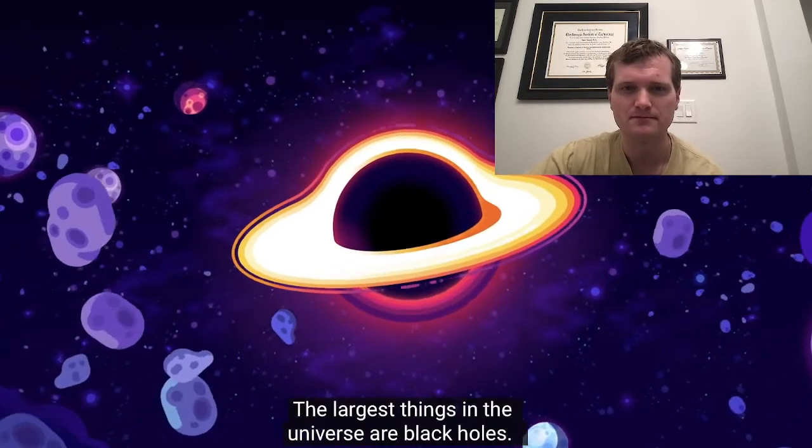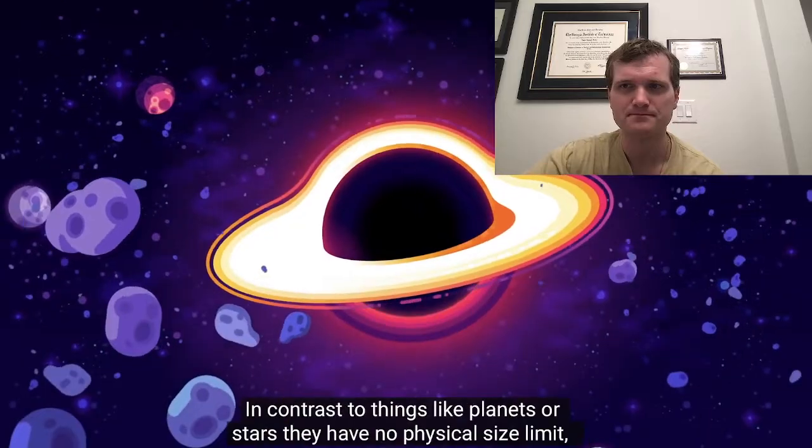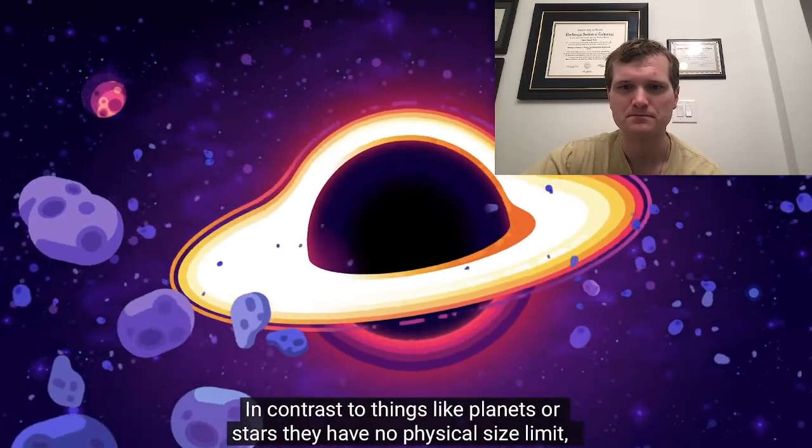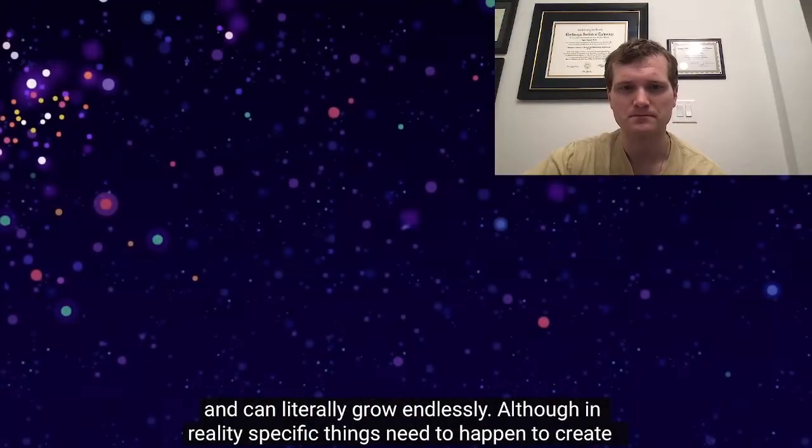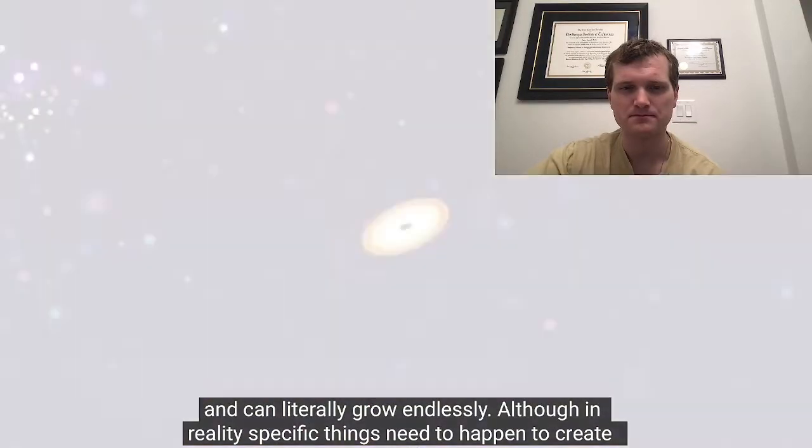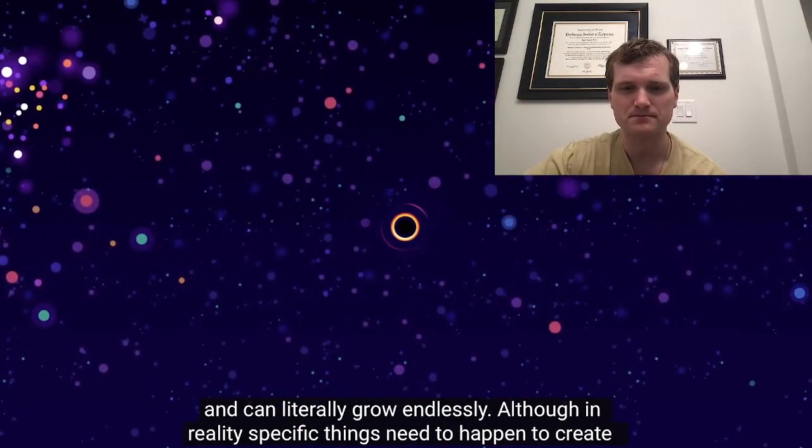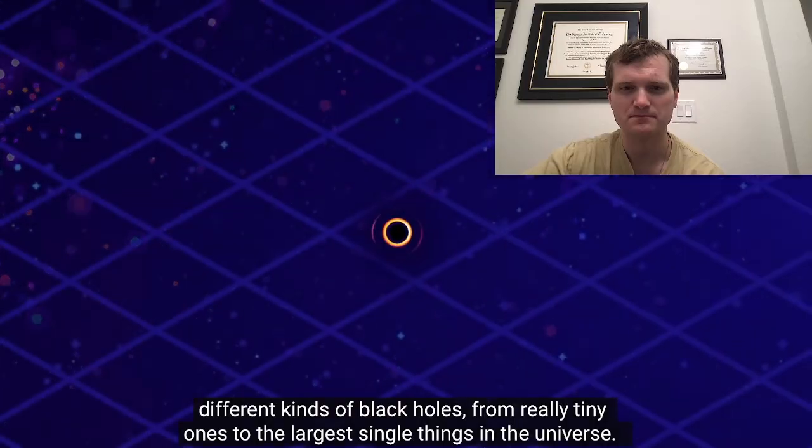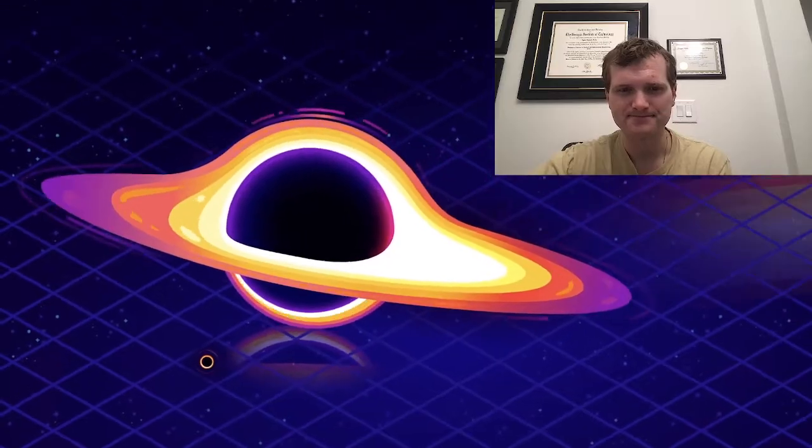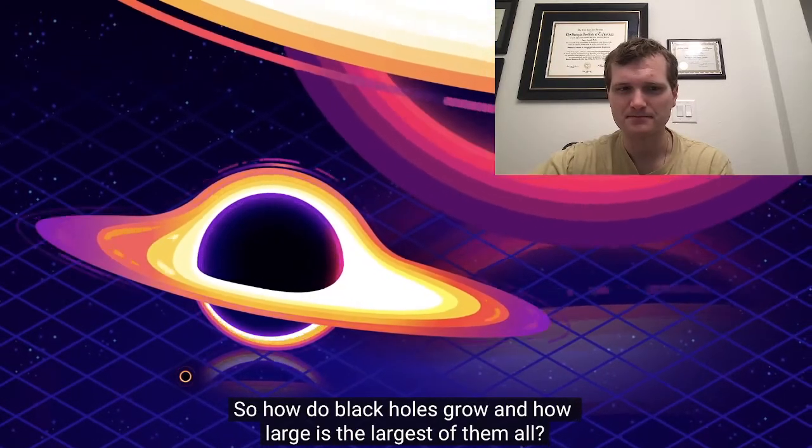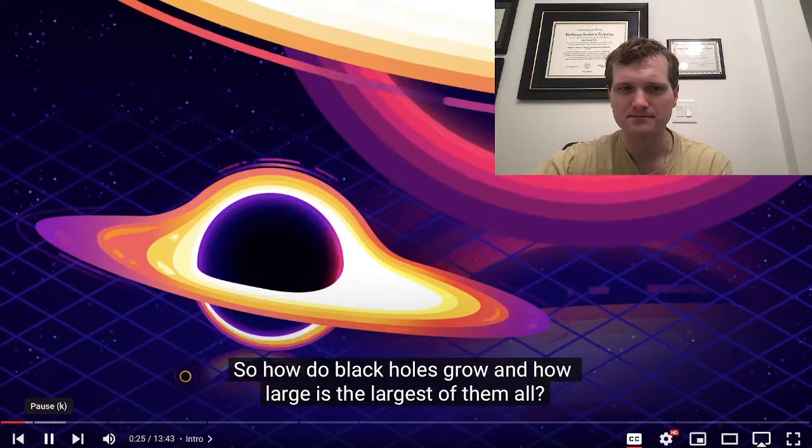The largest things in the universe are black holes. In contrast to things like planets or stars, they have no physical size limit and can literally grow endlessly. Although in reality, specific things need to happen to create different kinds of black holes, from really tiny ones to the largest single things in the universe. So how do black holes grow, and how large is the largest of them all?